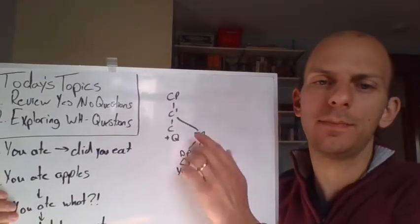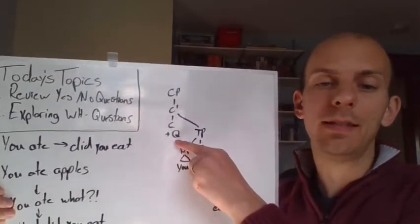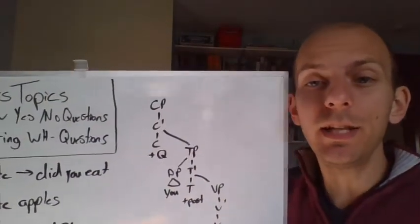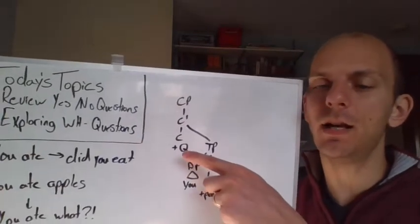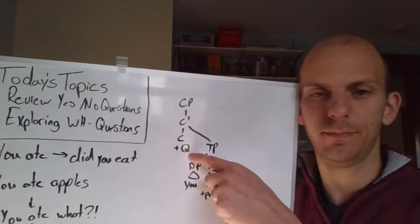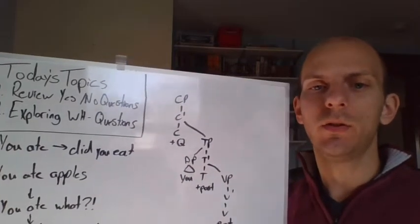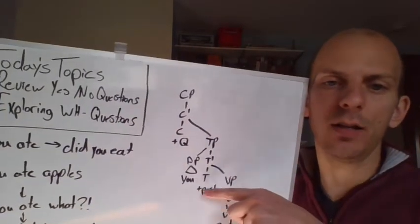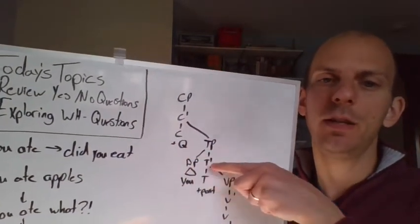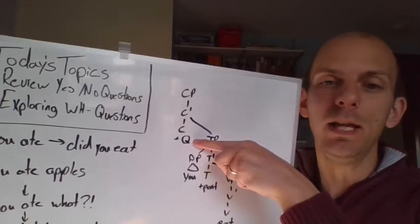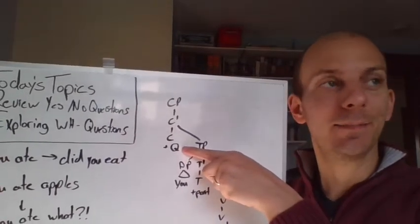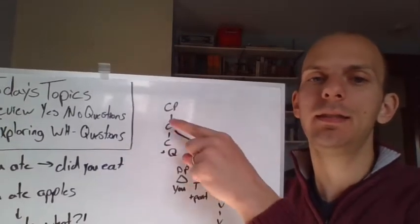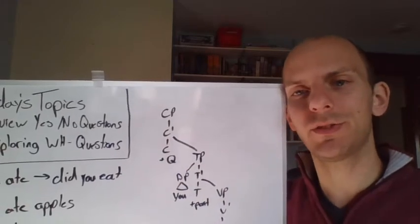So with the sentence 'did you eat', what we'll notice is that we have the +Q feature here in C. For 'you ate' that shouldn't be there. For 'did you eat' this is here though. And what this means is something needs to go here—somebody needs to come help me out and support me. Somebody needs to go there. It draws up T-to-C movement. This triggers T-to-C movement.